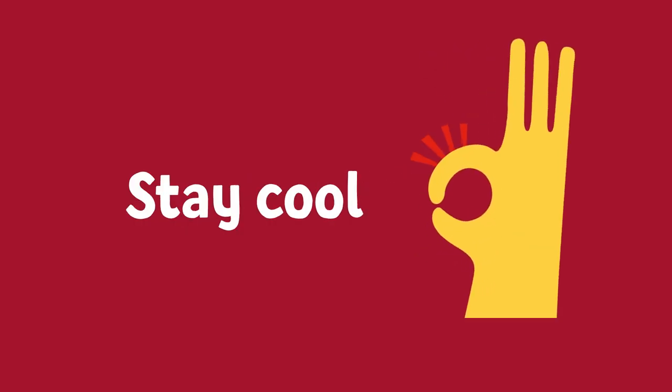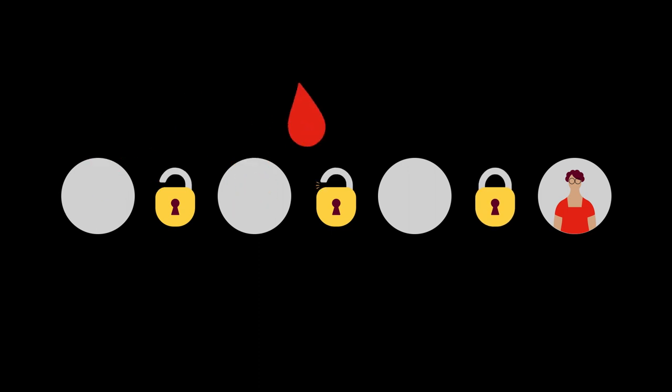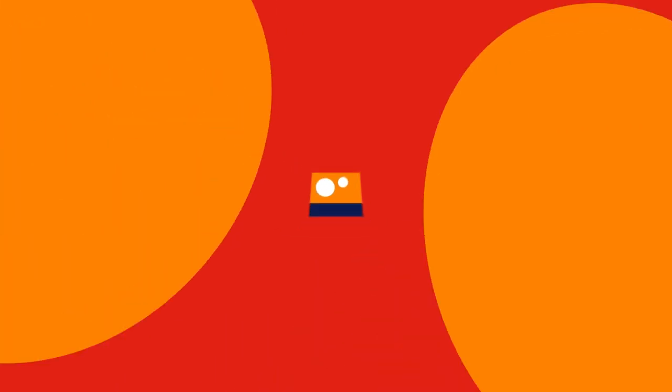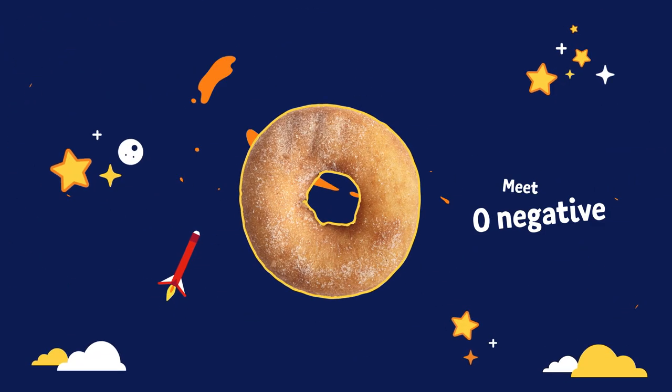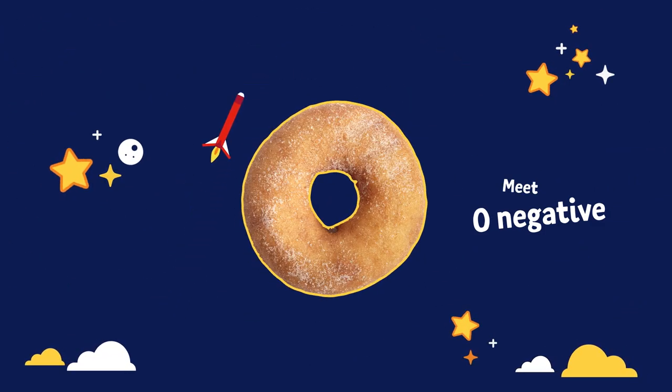But don't worry. There are multiple safeguards in place to make sure a recipient doesn't receive the wrong blood type. But in emergencies, there's no time to check. And that's where the universal blood type comes in.